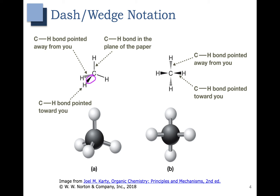This bond here is a wedge or wedged line, implying that it's sticking out, and this dashed or hashed line is pointed away from you. Anything drawn as a plain line is meant to be in the plane of the paper. The 3D model shows the wedged hydrogen sticking out, the hashed line sticking back, and the other two hydrogens in the plane of the paper.